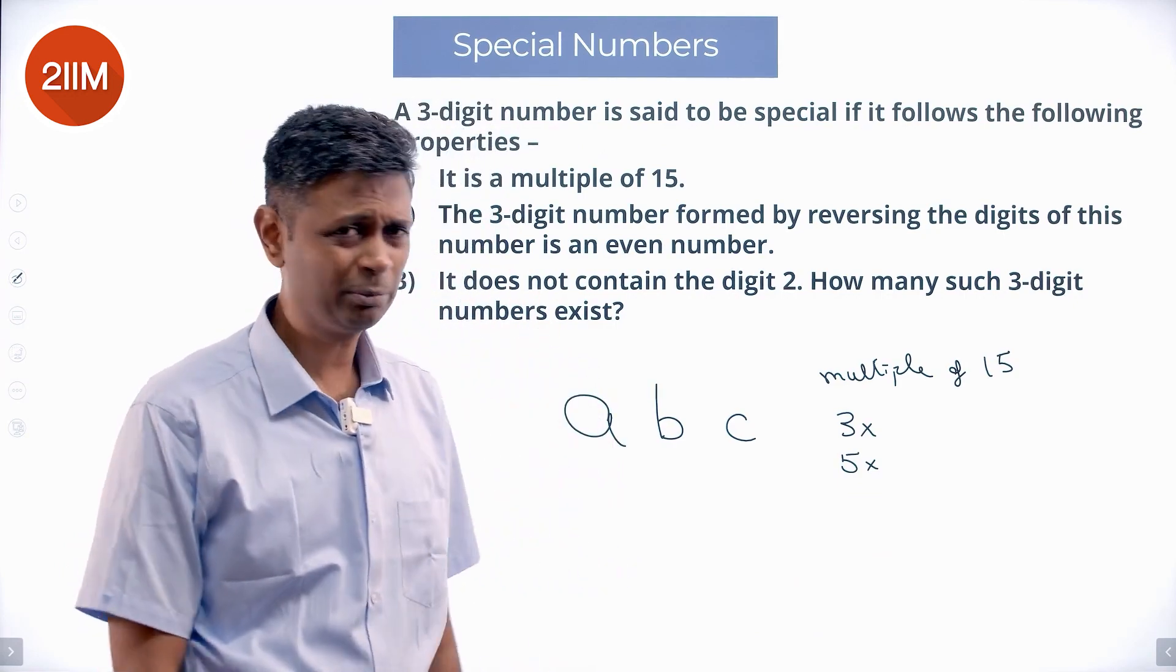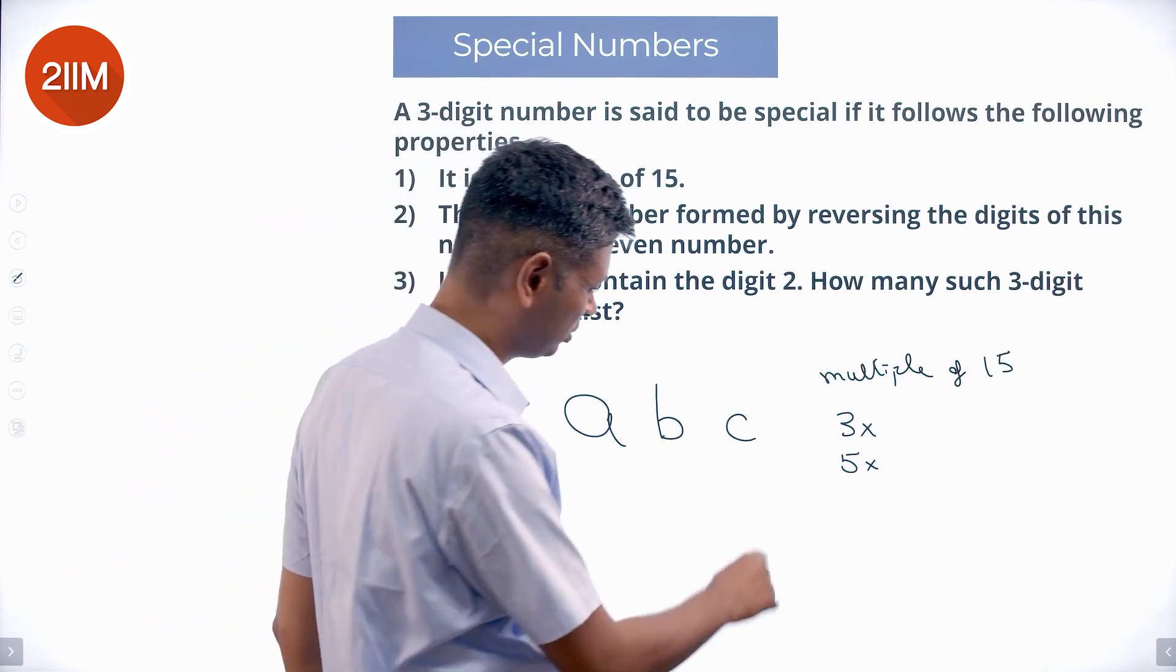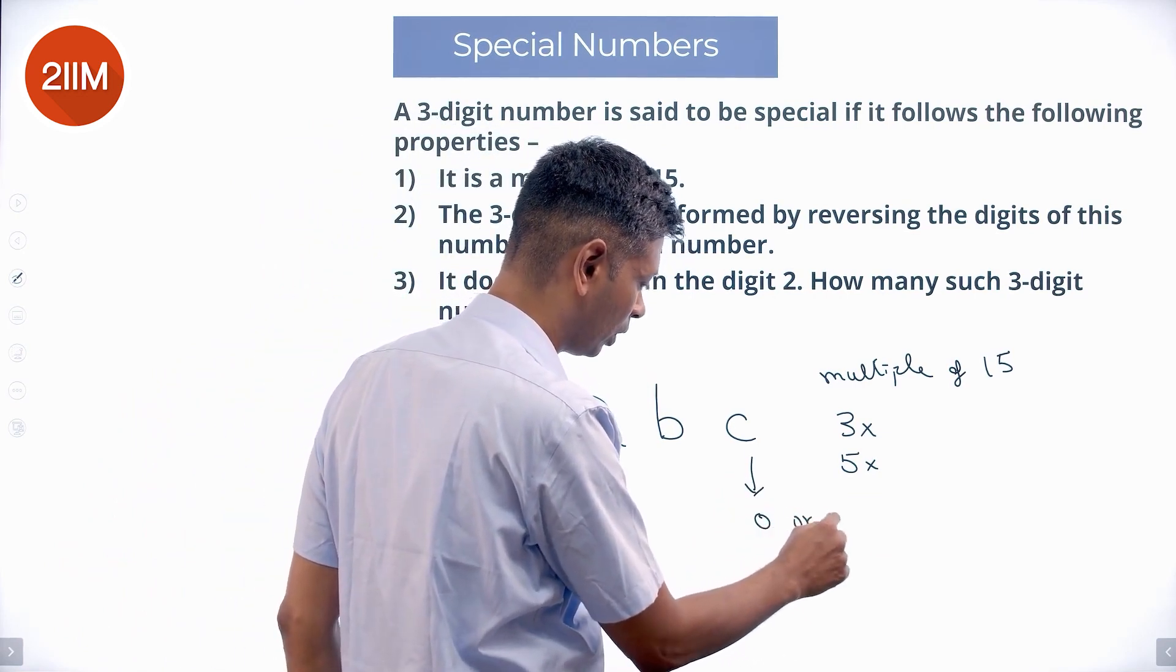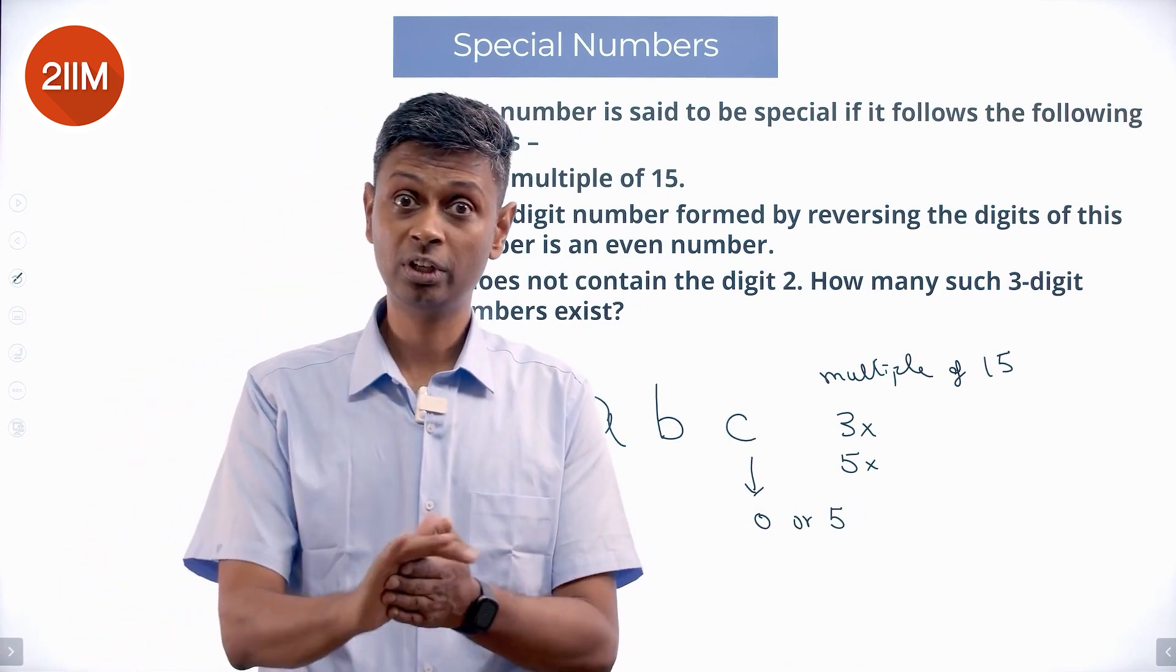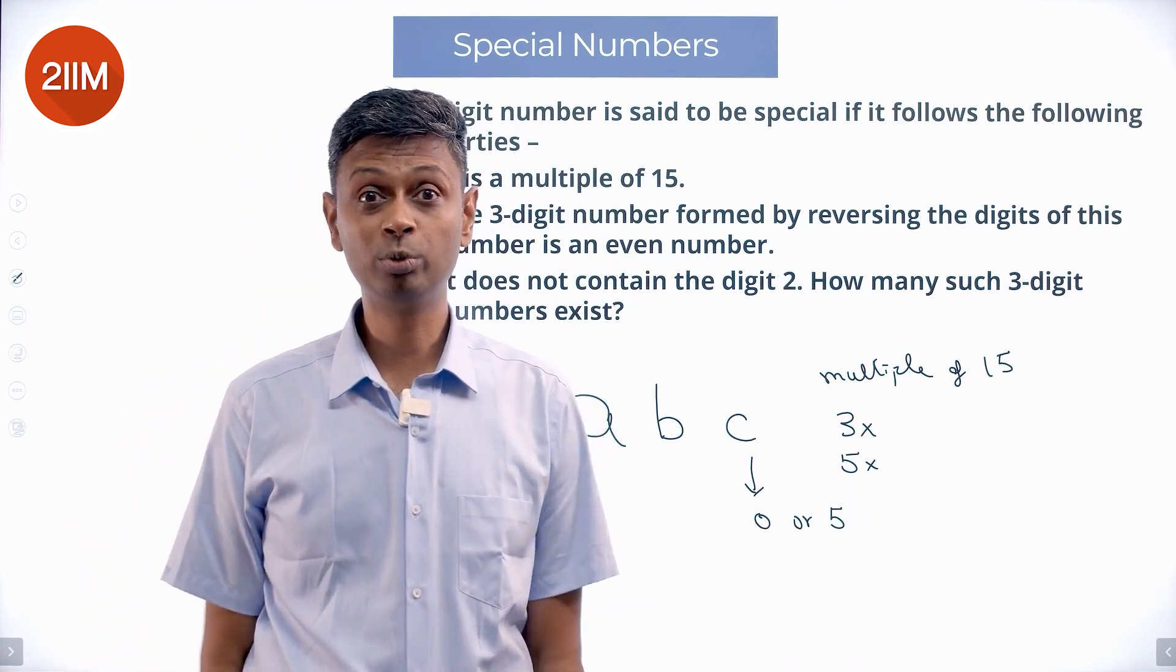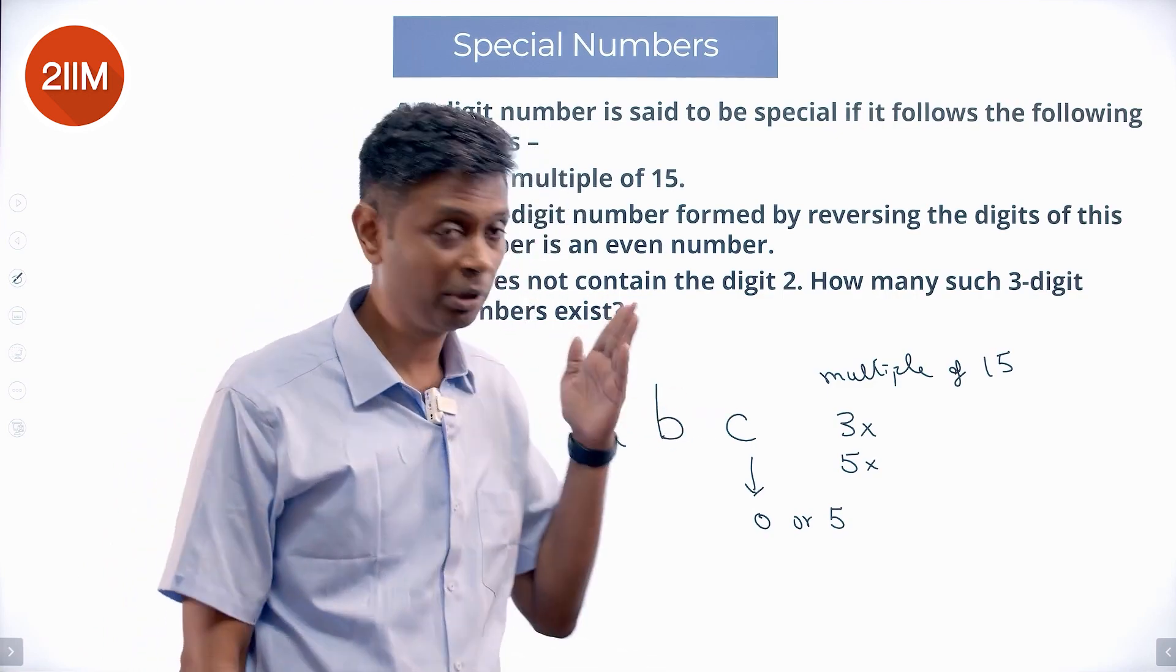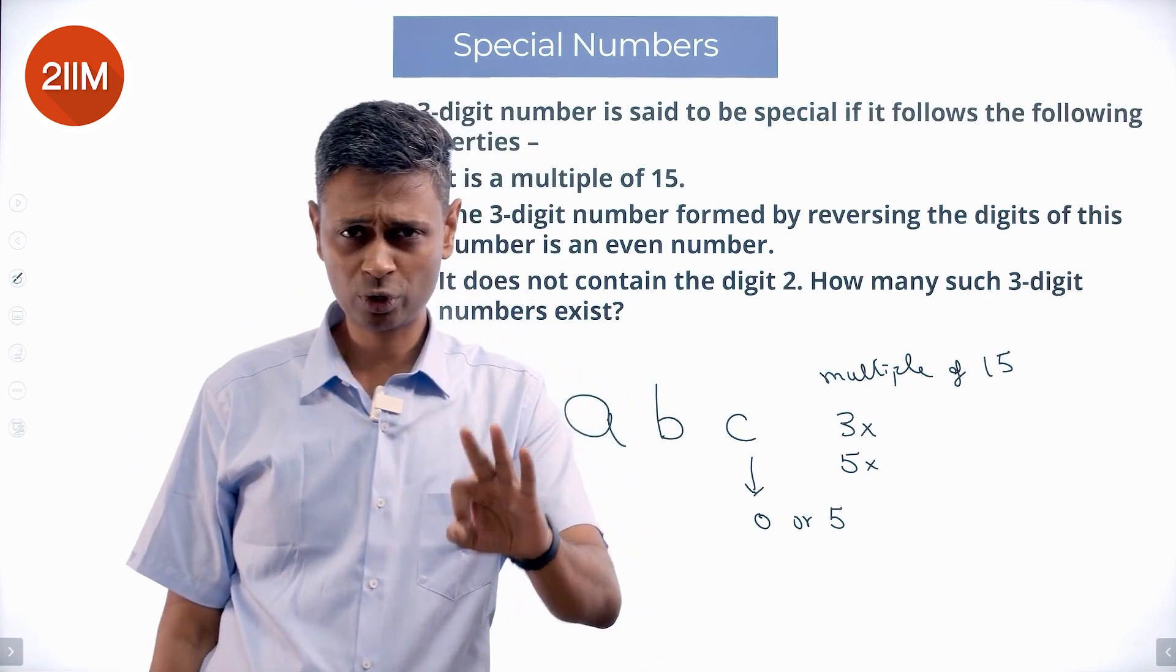Should be a multiple of 3 and a multiple of 5. If it's a multiple of 5, what do I know? I know this should be 0 or 5. The last digit should be 0 or 5. If it's a multiple of 3, what do I know? I know this beautiful thing that if I add all the digits, that should be a multiple of 3.